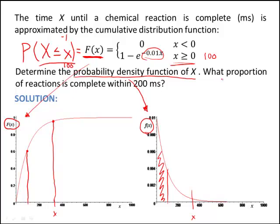So the last part of the question is what proportion of reactions is complete within 200 milliseconds? Well, we could find that by putting 200 into the capital F, or we could find it by integrating the area under the curve up to 200 on little f.